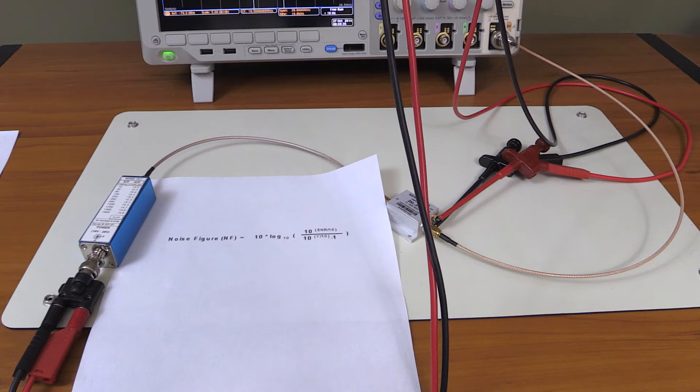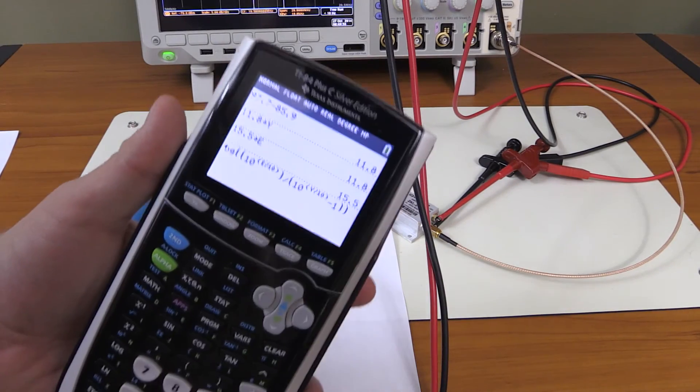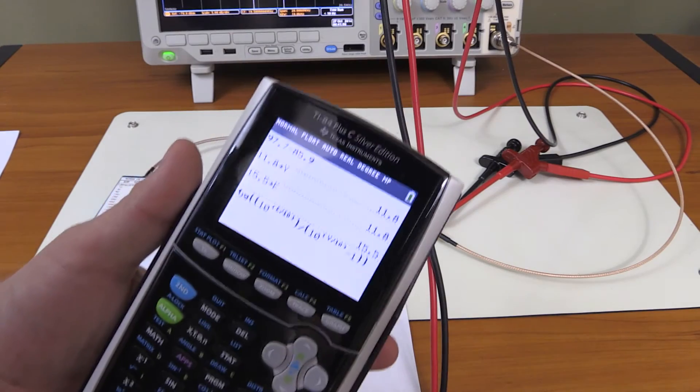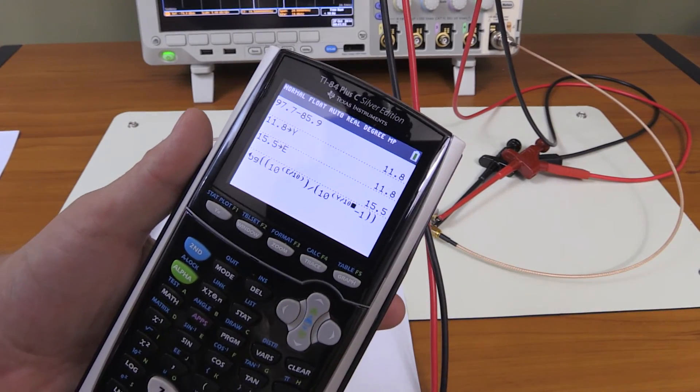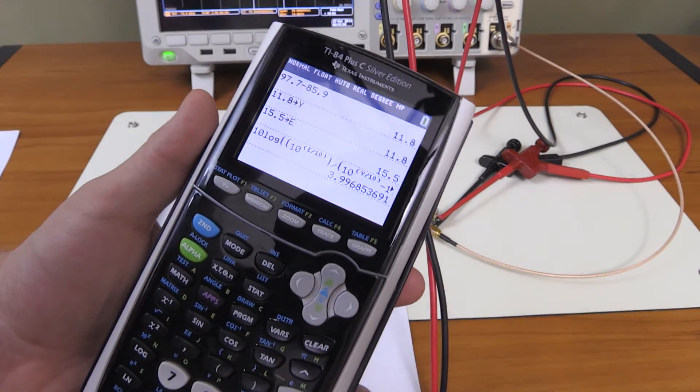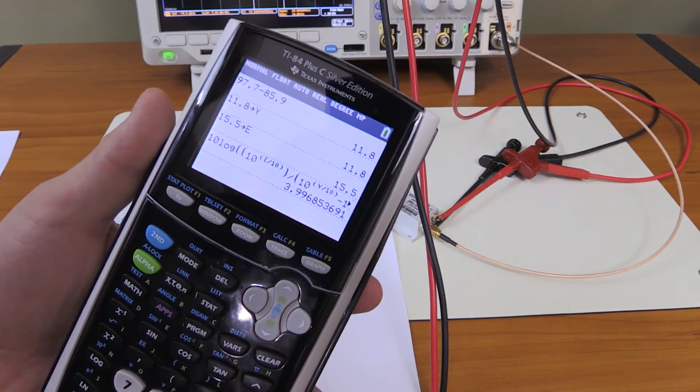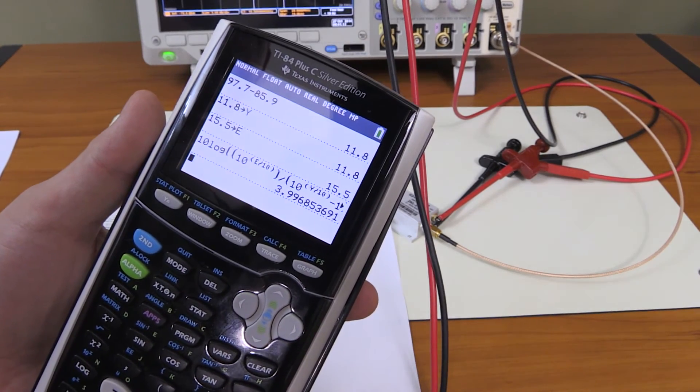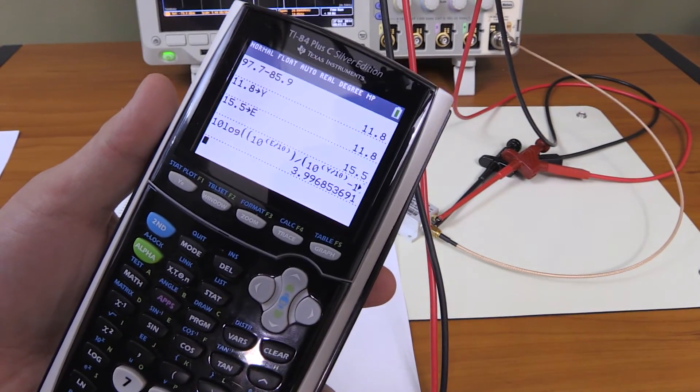All right, 10 log, 10 to the power of E (our variable) divided by 10, divided by 10 to the power of Y divided by 10, minus one. There we go. Got it all typed into the calculator. I'm using variables—of course you can just type the numbers in directly, but I just did that for clarification, for better overview.